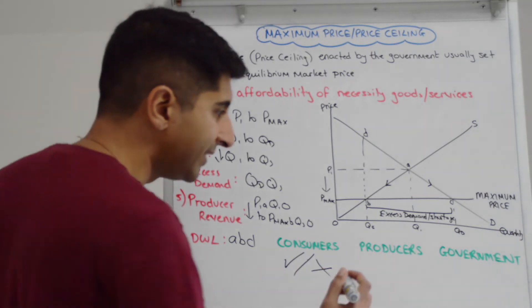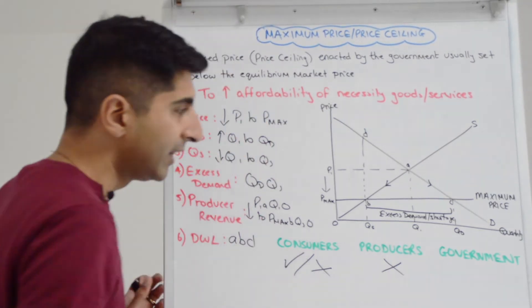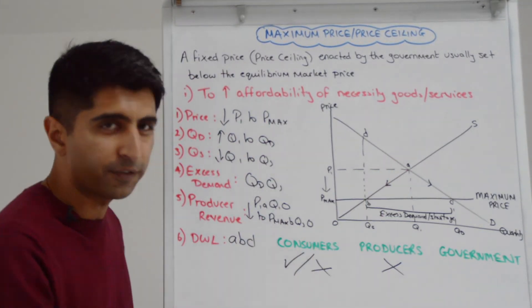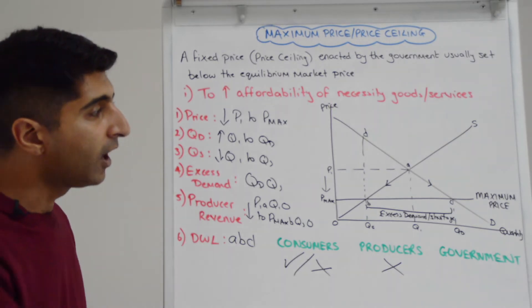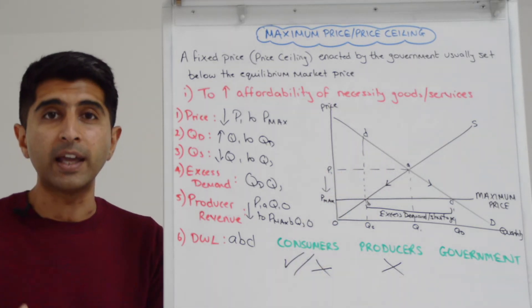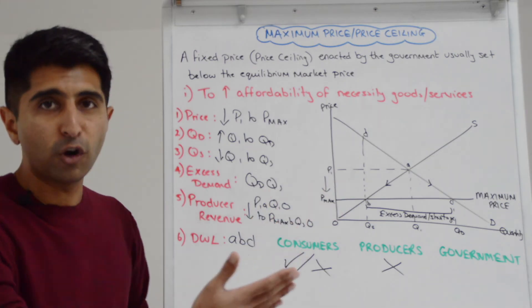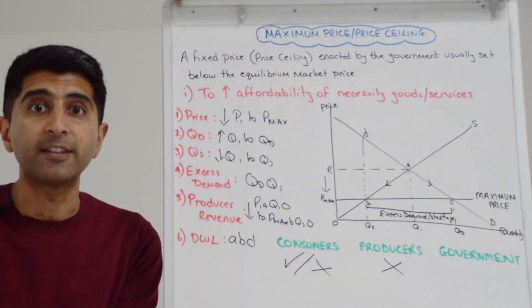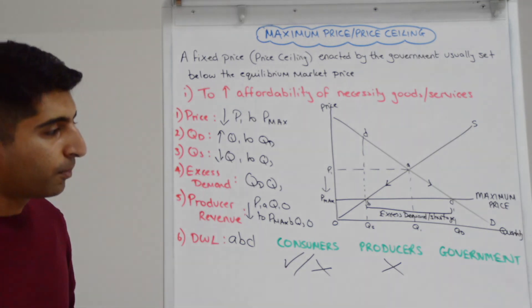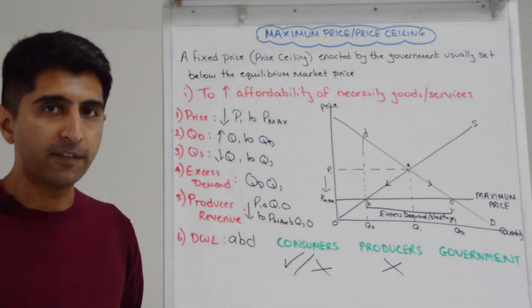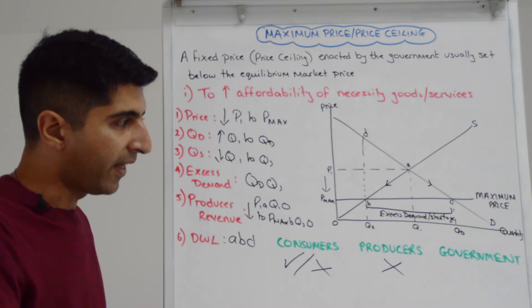What about producers? Well, they are definitely not enjoying the maximum price. There is a contraction of supply. There is a fall in producer revenue, a fall in producer surplus. A lot of producers now will be moving. And instead of providing rent and accommodation under this rent control, they provide something else which doesn't fall under this regulation. So producers are not happy with the impact of this maximum price on their revenue, on their living standards.